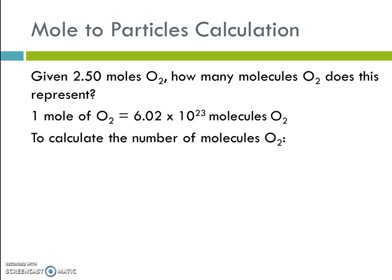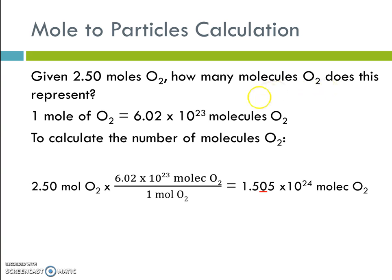starting with our given, like we always do, given 2.50 moles of oxygen times our conversion fact, and right here is our conversion fact. I like to point out that since we started with moles of oxygen, our conversion fact has to have the unit that we want on top, molecules, and the unit that we're getting rid of, moles in the denominator. That way it cancels out.